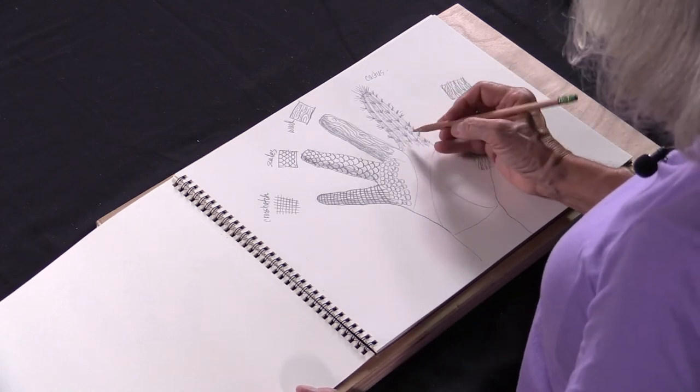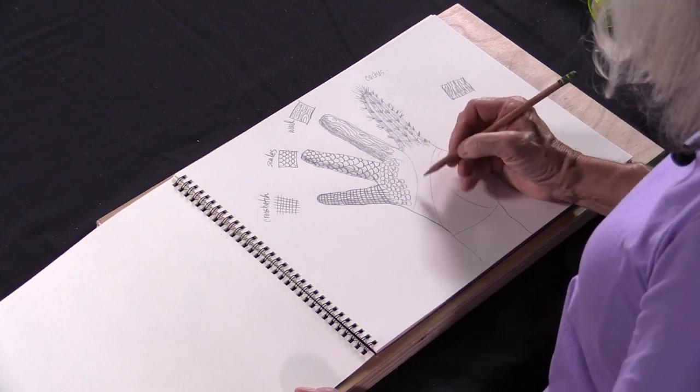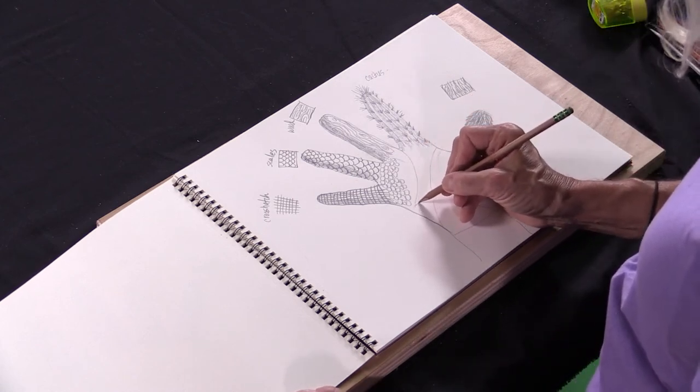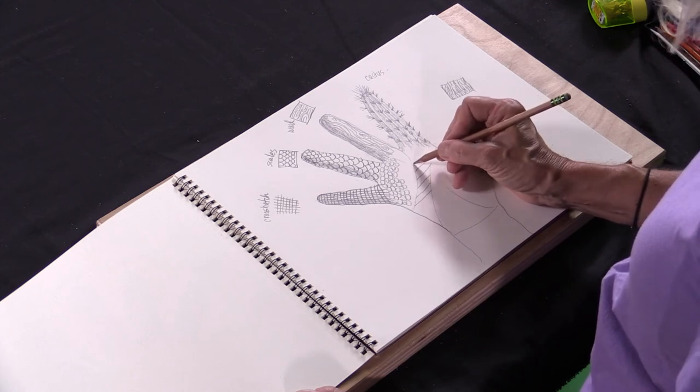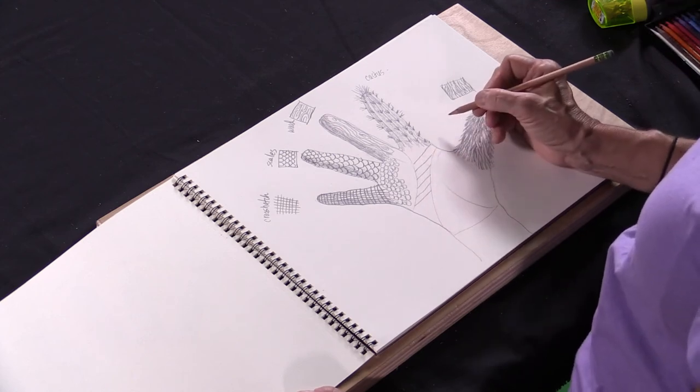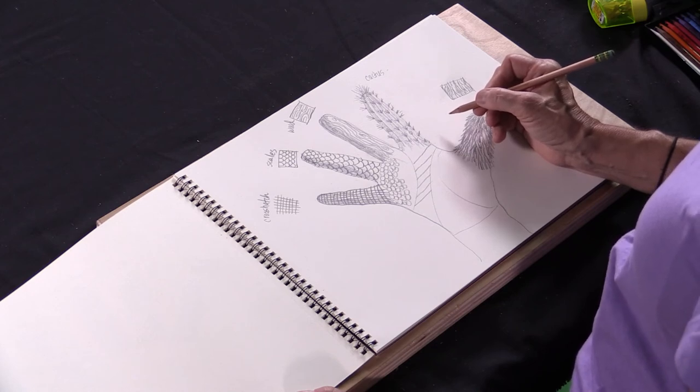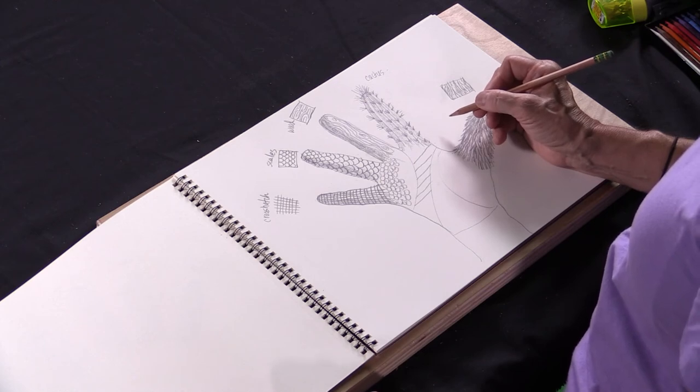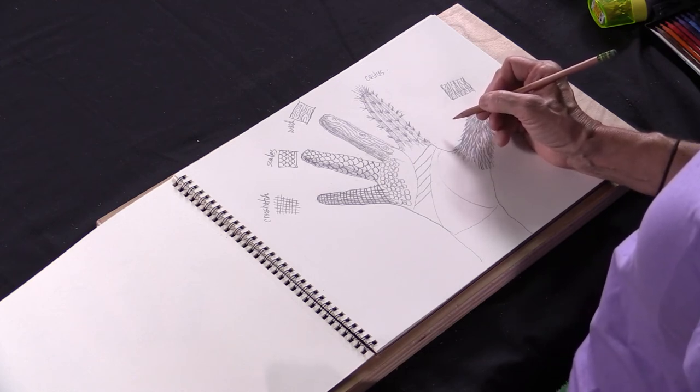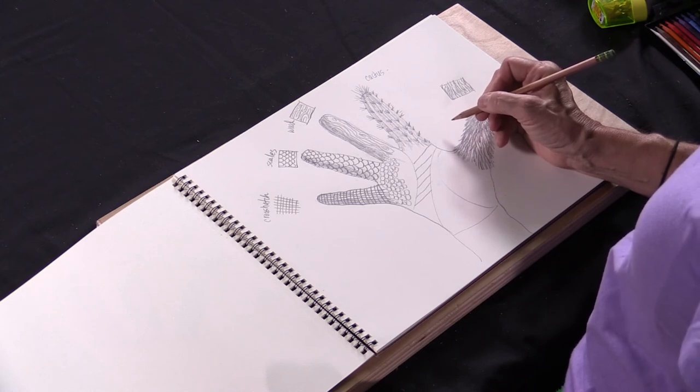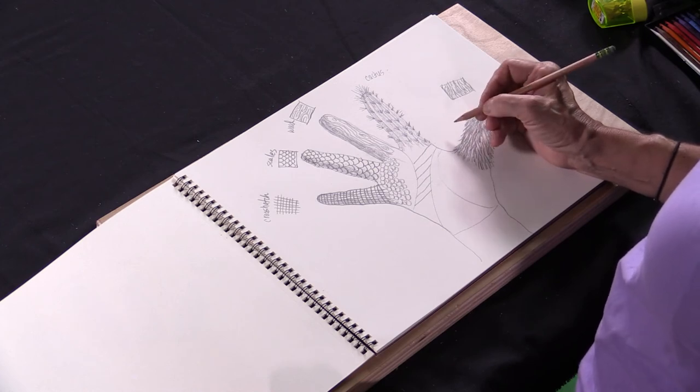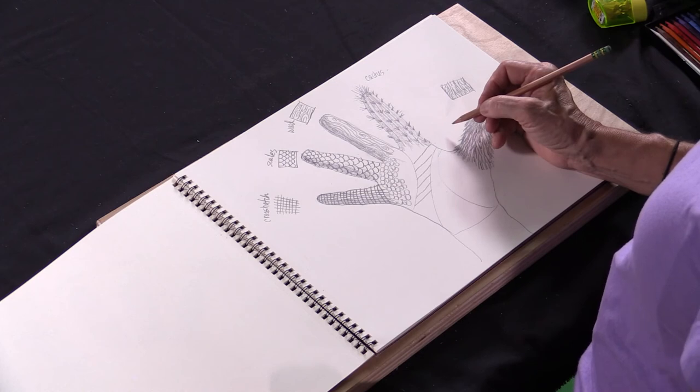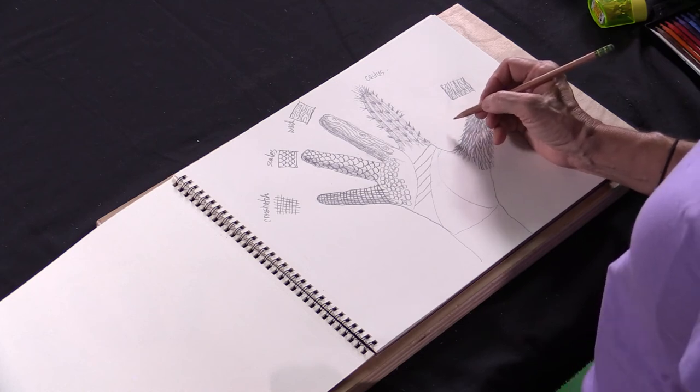How about something a little different? So we saw the crosshatching before, but what if we wanted to draw something that looked more like a chain link fence or something?